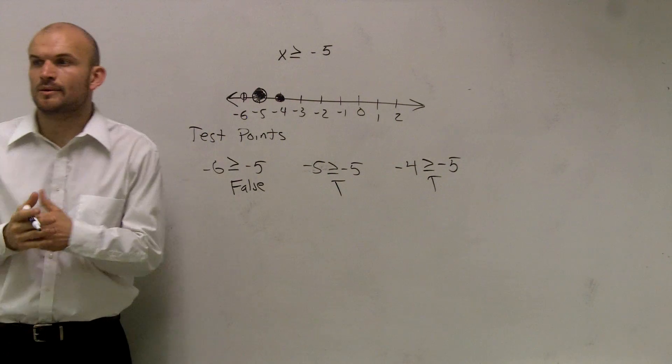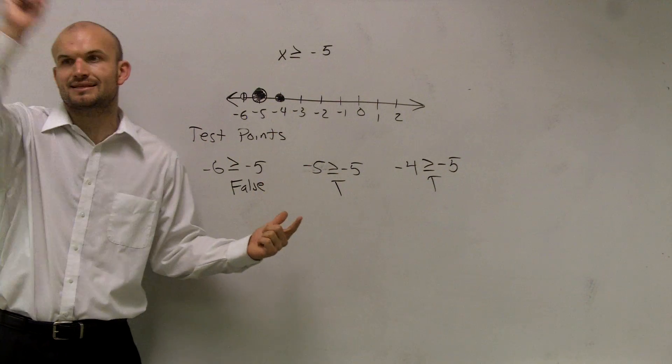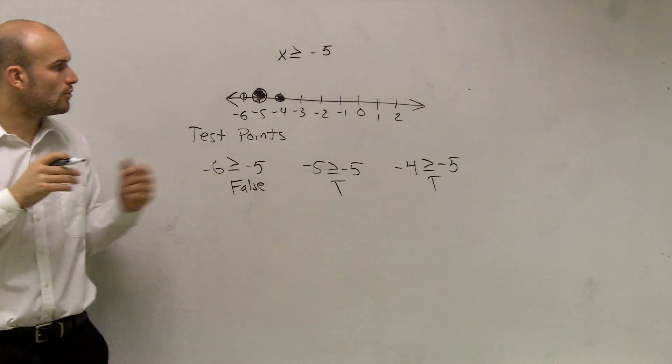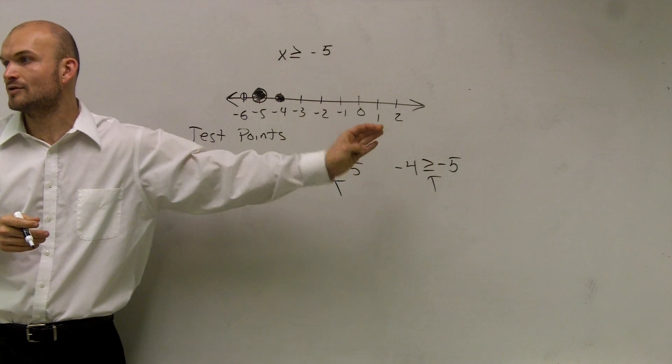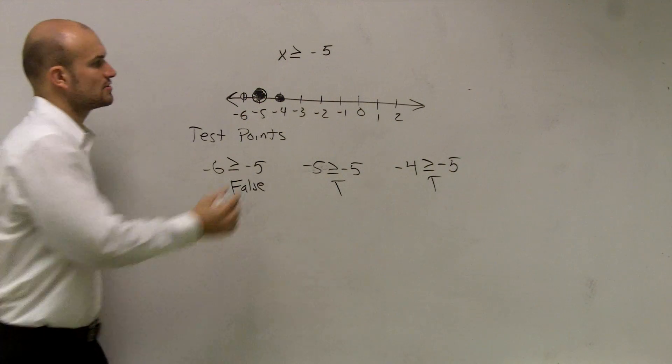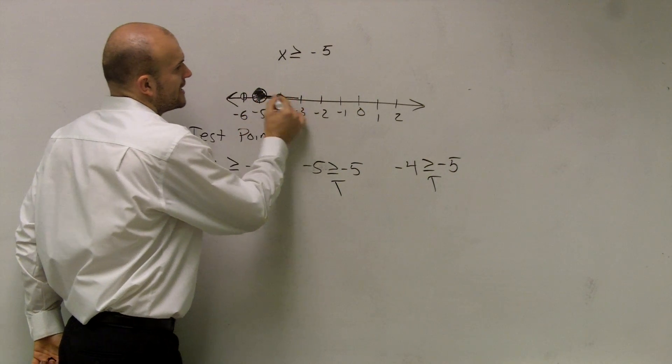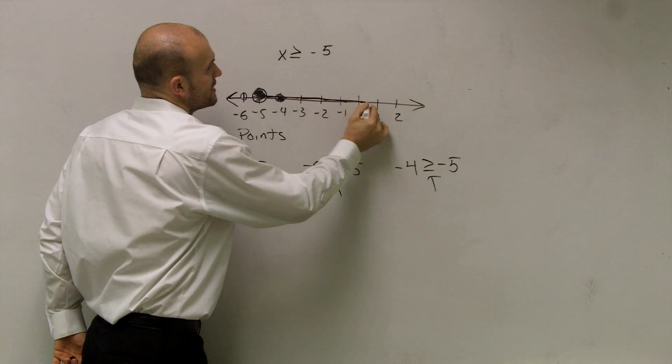Now we need to determine, well, how am I going to graph, right? Remember when we were graphing equations, we had like lines and arrows? So what we want to do is we want to continue, we want to make a line where all the true statements are. So what I'll do is I'm going to shade a line going in the right direction.